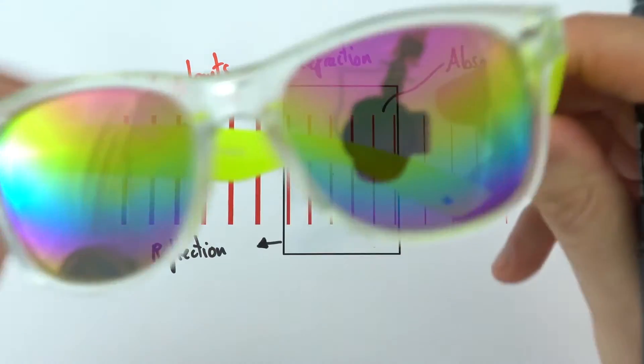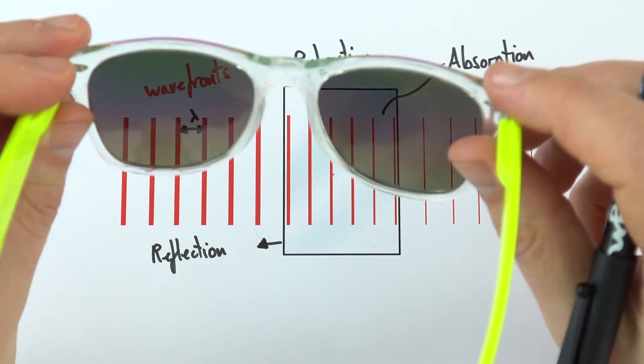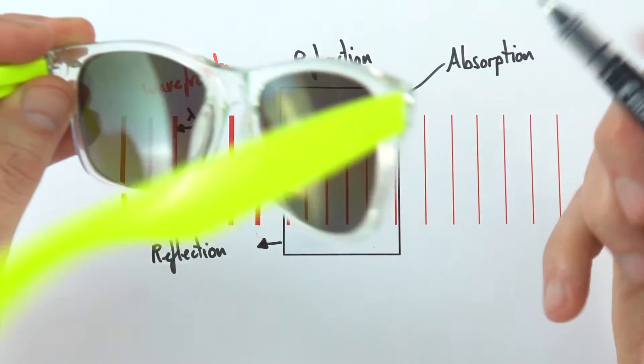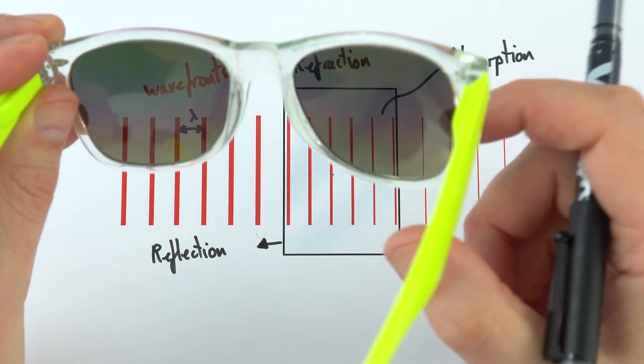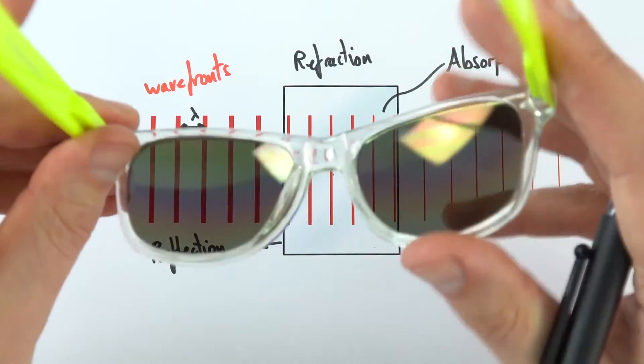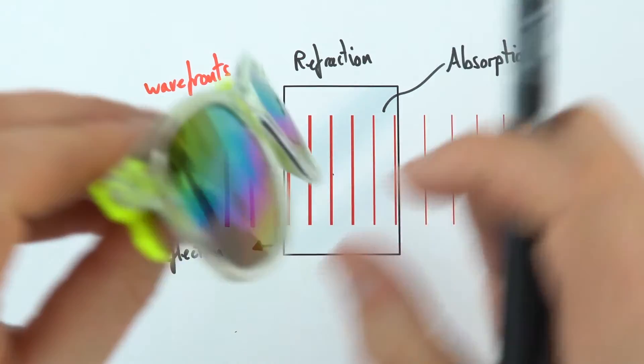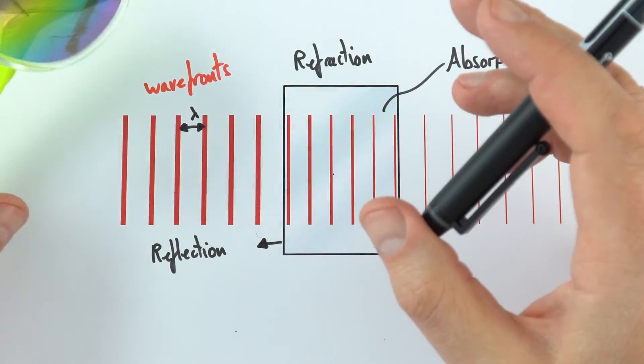And a great example might be when you've got sunglasses. So with sunglasses, they don't let all of the light through. That's why they're slightly dark. And that means that you don't get exposed to the intense light that you might otherwise if you didn't have these sunglasses on. So all we've got is a wave going through a different medium and that absorbs some of that light.